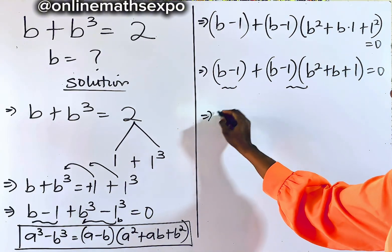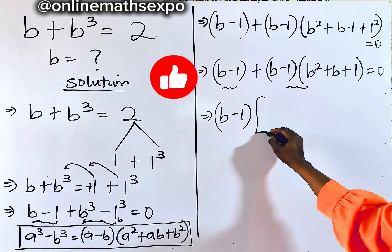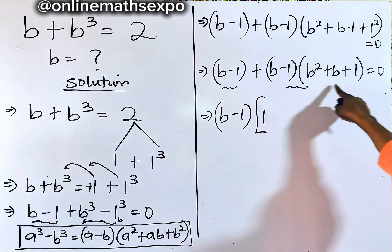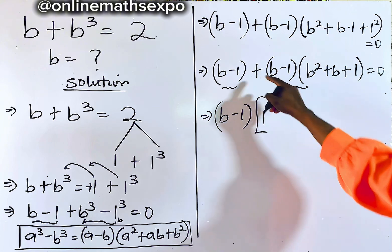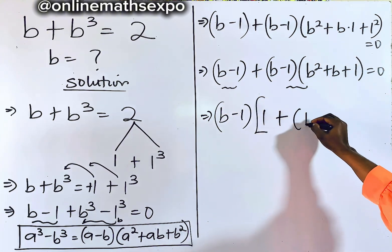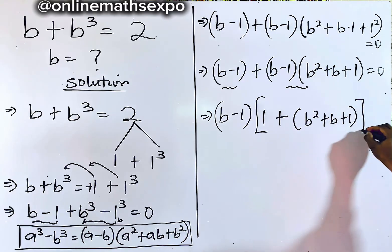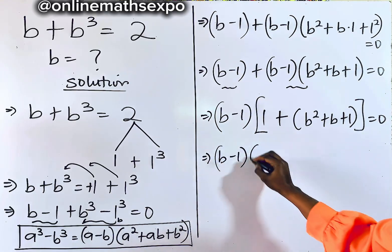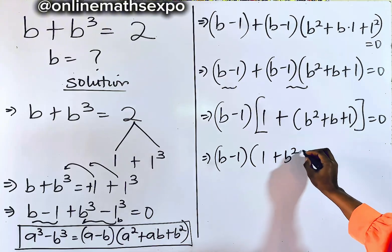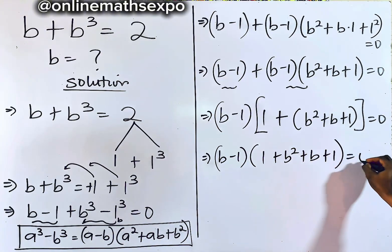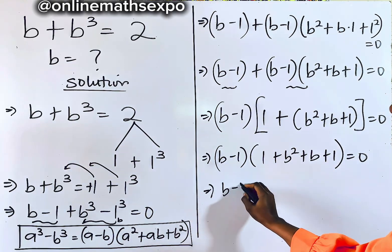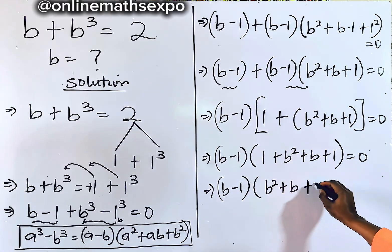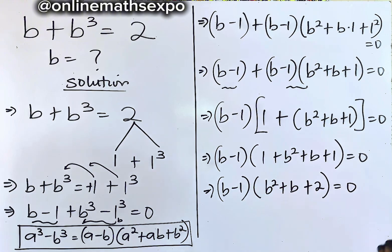Observe that (b − 1) is repeated in both parts, so we factor it out to get (b − 1)[1 + (b² + b + 1)] = 0. Simplifying inside the bracket: 1 + 1 = 2, so we have (b − 1)(b² + b + 2) = 0.